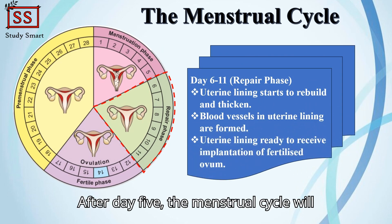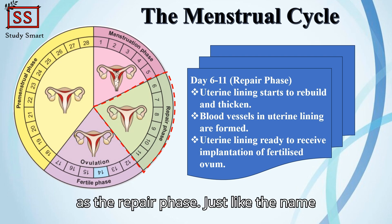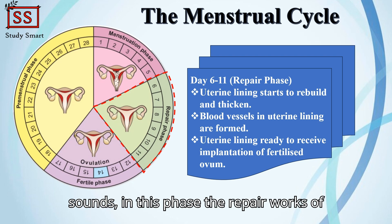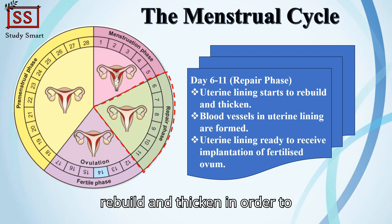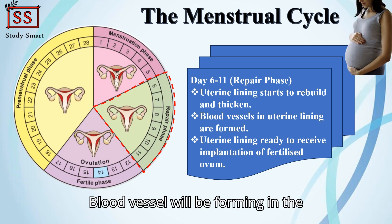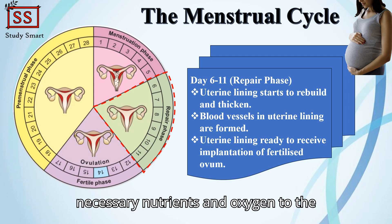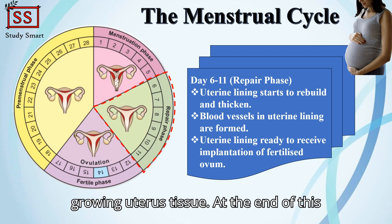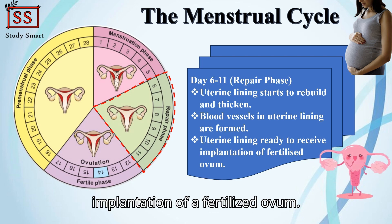After day 5, the menstrual cycle enters the second stage, known as the repair phase. Just like the name sounds, in this phase the repair of the broken uterine lining starts to take place. The uterine lining begins to rebuild and thicken in order to prepare for a potential pregnancy. Blood vessels form in the uterine lining to supply necessary nutrients and oxygen to the growing uterine tissue. At the end of this phase, the uterine lining is ready to receive implantation of a fertilized ovum.